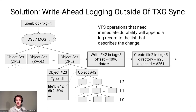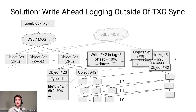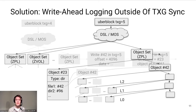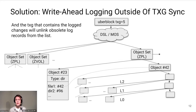When a VFS operation needs immediate durability, it appends a log record to that list describing what happened at the logical level. If everything goes well and the system doesn't crash, the change is written out in the transaction group as an update to the on-disk tree. As part of the new transaction group, we write out a new list head that pops off all the log records that are now obsolete because they are part of the tree structure proper.